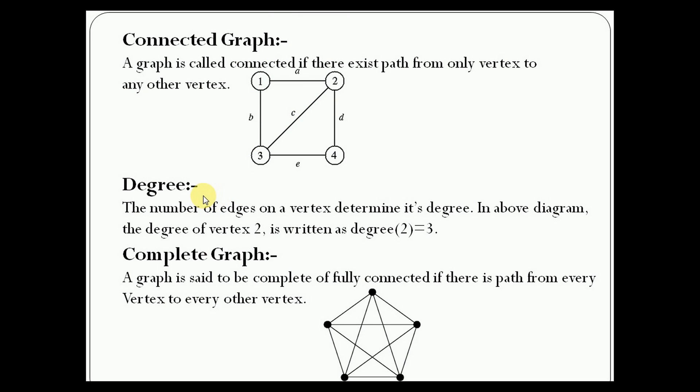The number of edges on a vertex determines its degree. In the above diagram, the degree of vertex 2 is 3 because there are 3 edges.